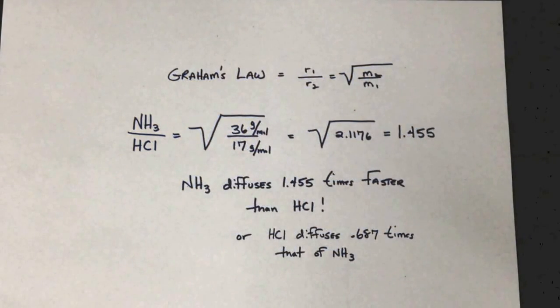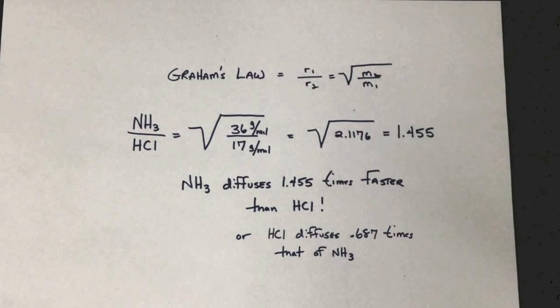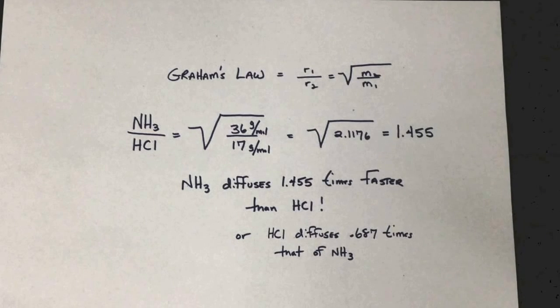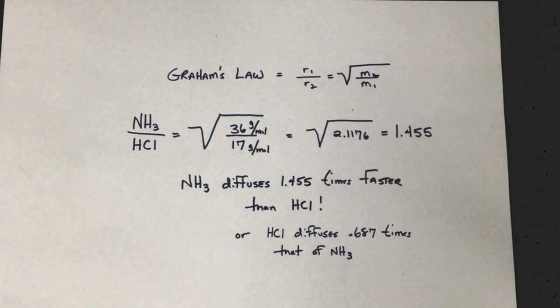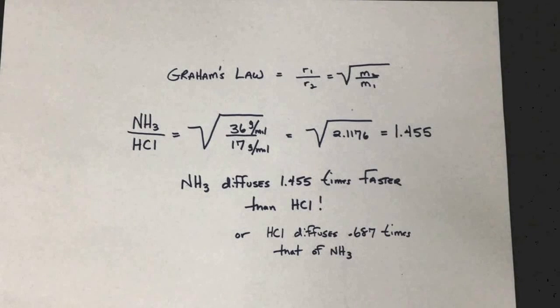So when you take 36 divided by 17, you get 2.1176. Take the square root of 2.1176, you get 1.455. From here, we see that ammonia diffuses 1.455 times faster than HCl.